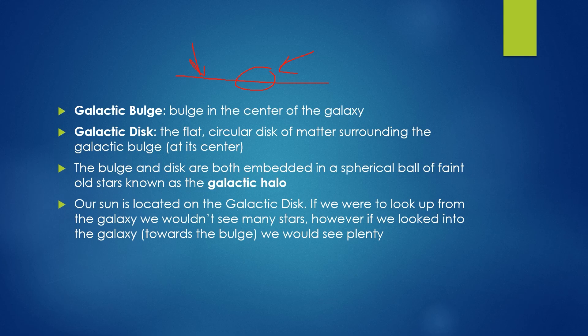In a spiral galaxy, the arms are located in the disc — this is where the majority of stars are found. The central bulge is going to have a lot of stars and be incredibly active and energetic — actually kind of dangerous for stars to form. The bulge and disc are both embedded in a spherical halo of faint old stars known as the galactic halo. There are stars out in the halo too, not all of the stars are in the bulge or in the disc — they actually form out here too and they're much, much older. Our sun is located on the galactic disc.